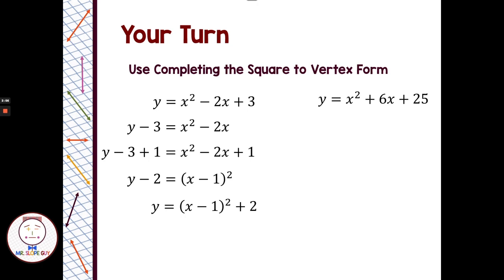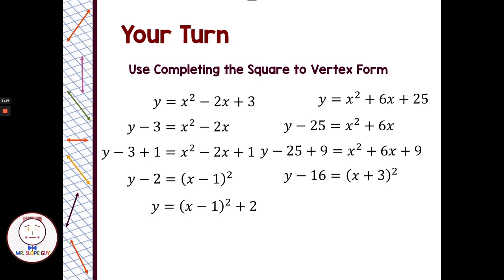For the one on the right side, we would subtract 25 from each side, then complete the square. Half of 6 is 3, and 3 squared is 9, so I need to add 9. If I add 9 on the right side, I add 9 on the left side. Then I can factor x squared plus 6x plus 9 as x plus 3 quantity squared. Negative 25 plus 9 is negative 16, so y minus 16. Then the last step is to add 16 to each side, and that gets me into vertex form.